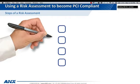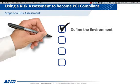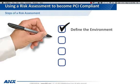Let's take a look at using a risk assessment to become PCI compliant. There are four key elements to a risk assessment. First, define the environment. The components, the physical security, site details, traffic flow, component visibility, virtual hardware components, and physical hardware components are all elements that need to be assessed in this environment.